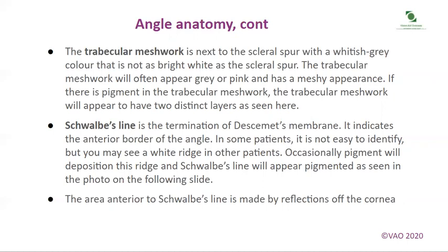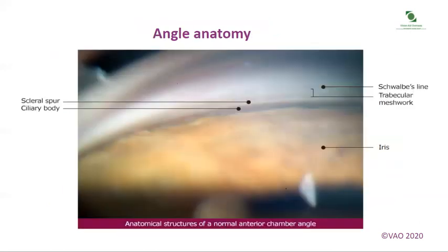Schwalbe's line is the termination of Descemet's membrane and indicates the anterior border of the angle. In some patients, it is not easy to identify, but you may see a white ridge in others. Occasionally, pigment will deposit on this ridge and Schwalbe's line will appear pigmented, as seen in the photo on the following slide. The area anterior to Schwalbe's line is made by reflections off the cornea. Here is a photograph showing the various landmarks in the anterior chamber angle.